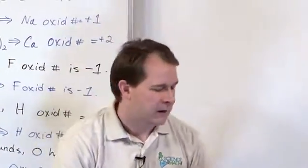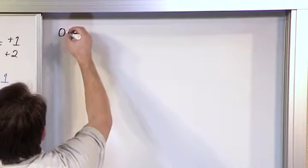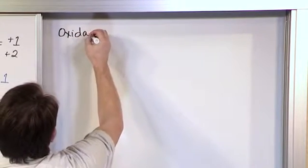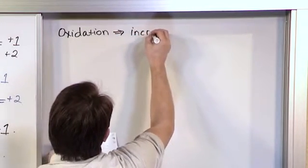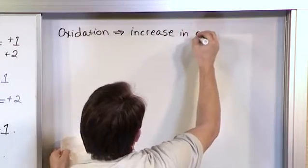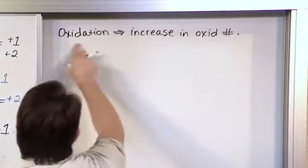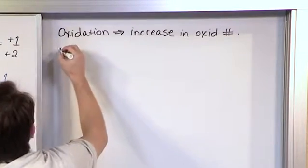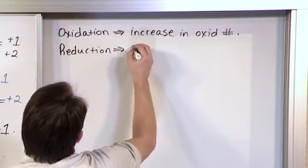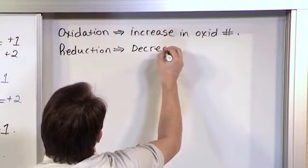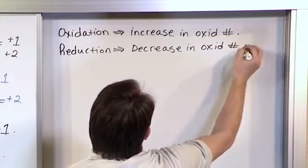And so when you see something increase or decrease in oxidation number, that's what you're looking for. So specifically the definition of what we're looking for, for oxidation, is very easy actually. It's the increase in the oxidation number. So if oxidation is defined to be the increase in oxidation number, then reduction is defined to be the decrease in the oxidation number in chemical reaction.